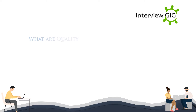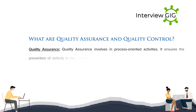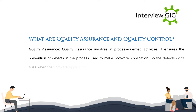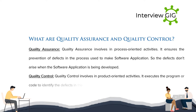What are quality assurance and quality control? Quality assurance involves process-oriented activities; it ensures the prevention of defects in the process used to make a software application so that defects don't arise when the application is being developed. Quality control involves product-oriented activities; it executes the program or code to identify the defects in the software application.